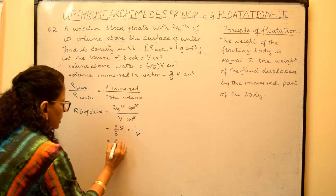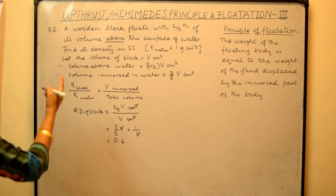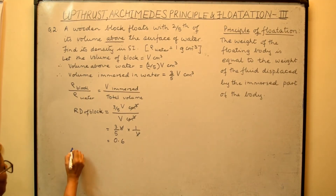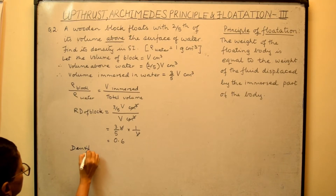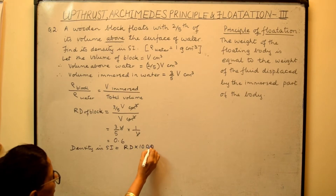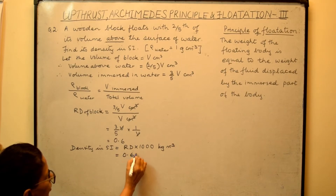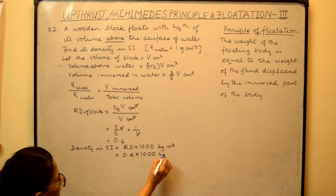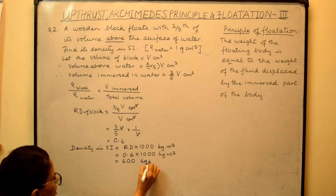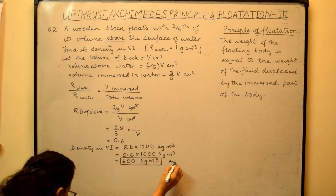And we get the relative density of the block as three-fifths, which is 0.6. But they are asking for density in SI units. So, density in SI = RD × 1000 kg/m³. That is 0.6 × 1000 kg/m³, which gives us 600 kg/m³. And that is our answer.